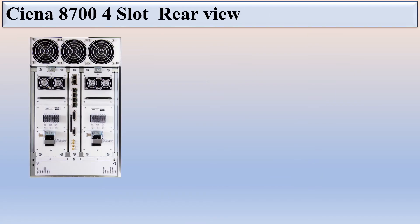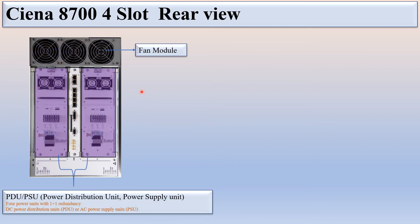This is the CNI 8700 4-slot rear view. The upper section is the fan module. There are two power distribution units — four power units with 1+1 redundancy — supporting either DC power distribution units or AC power supply units. You can insert either DC or AC power supply, but you cannot use both types together.